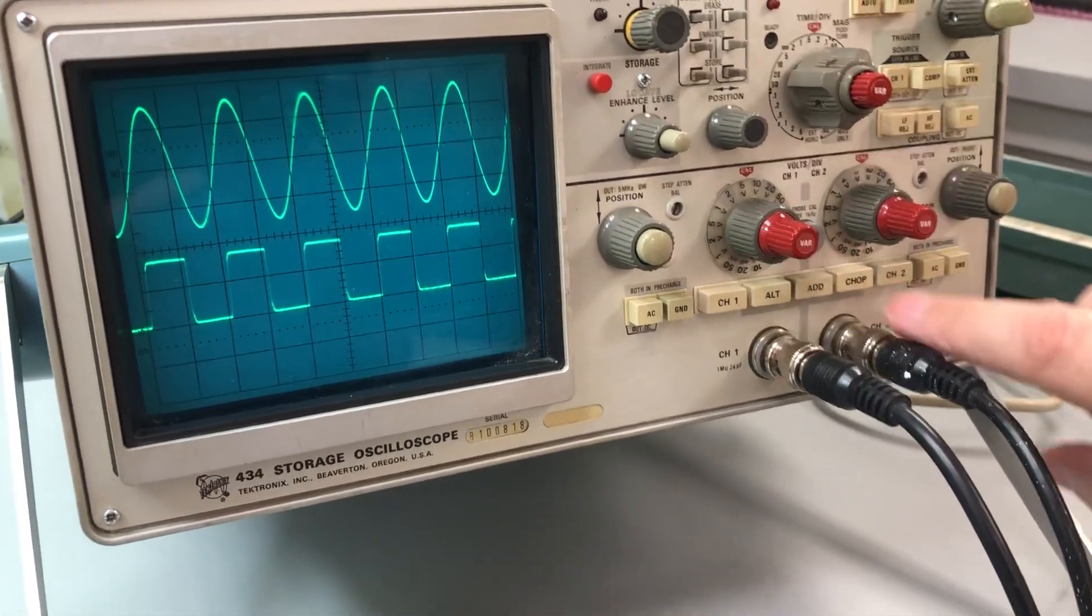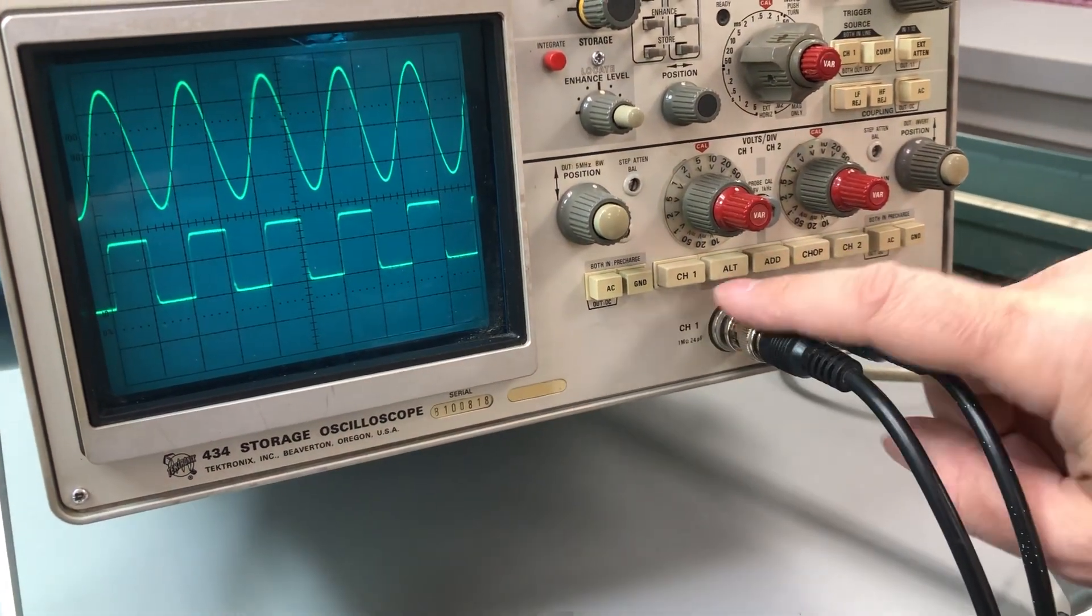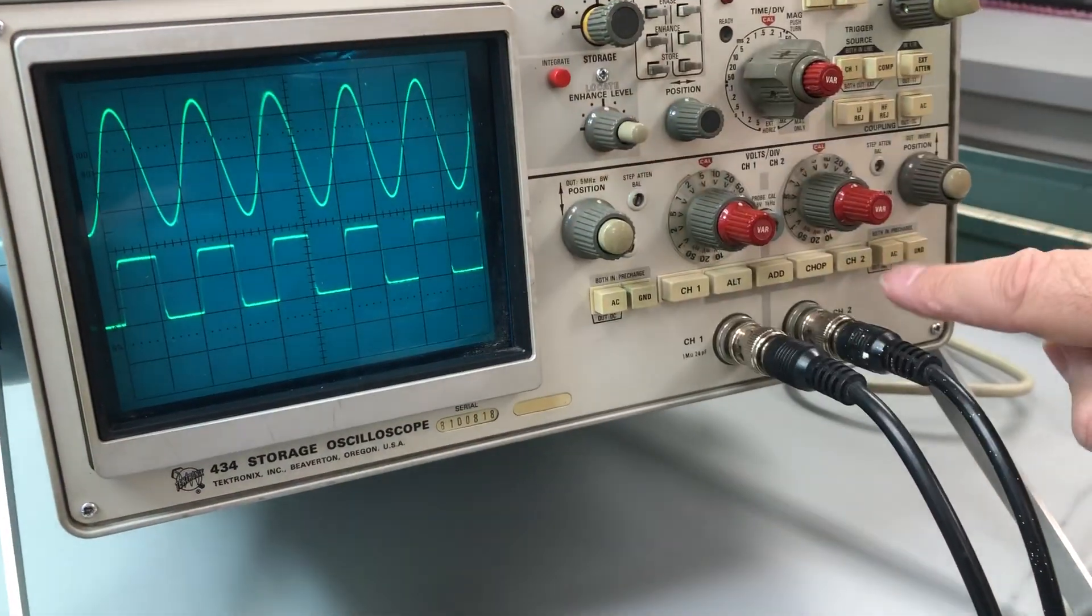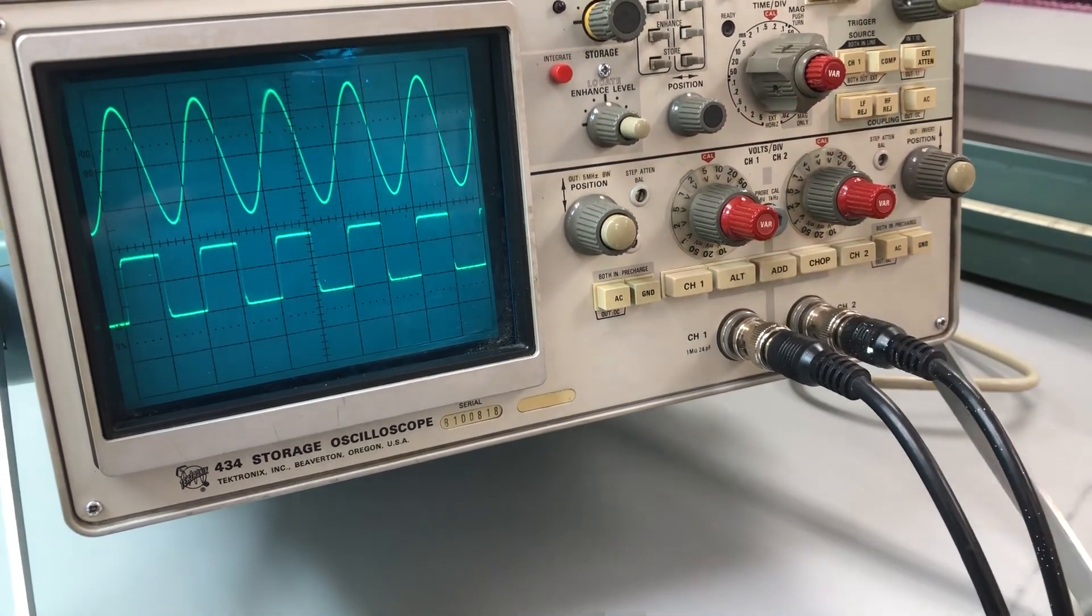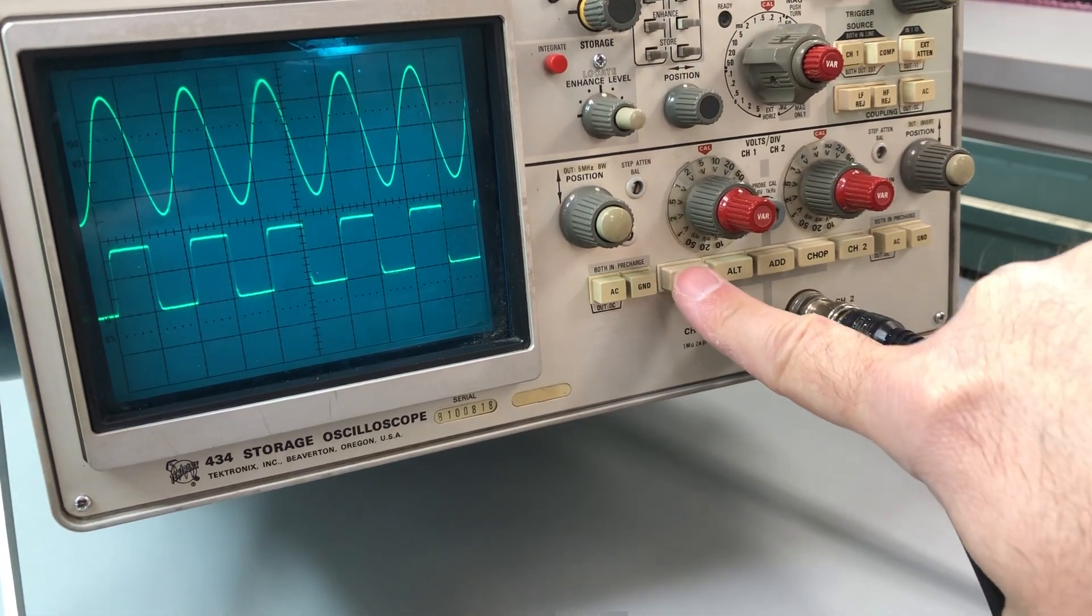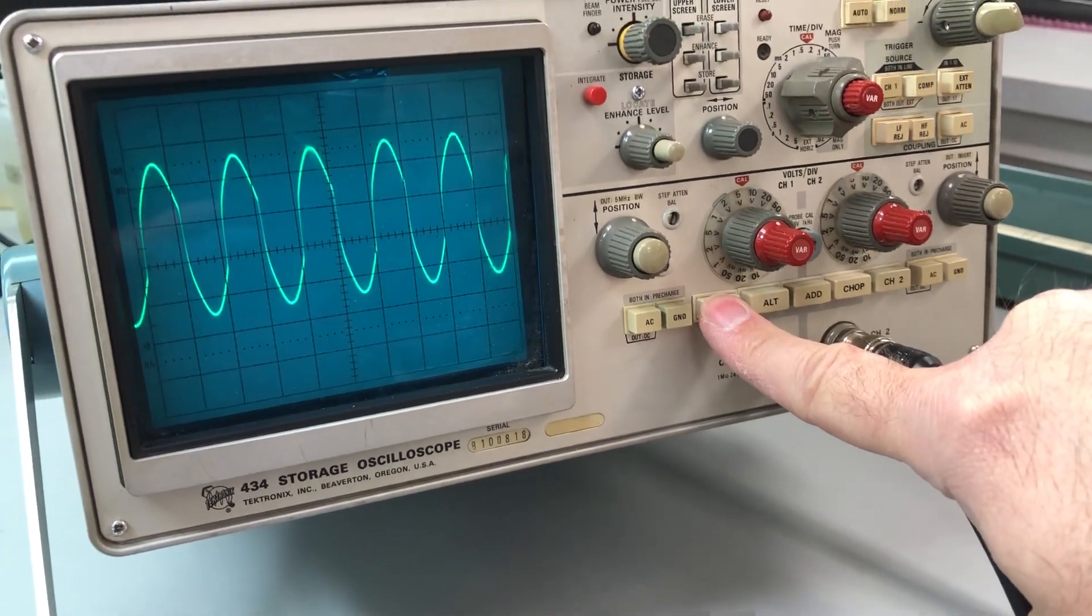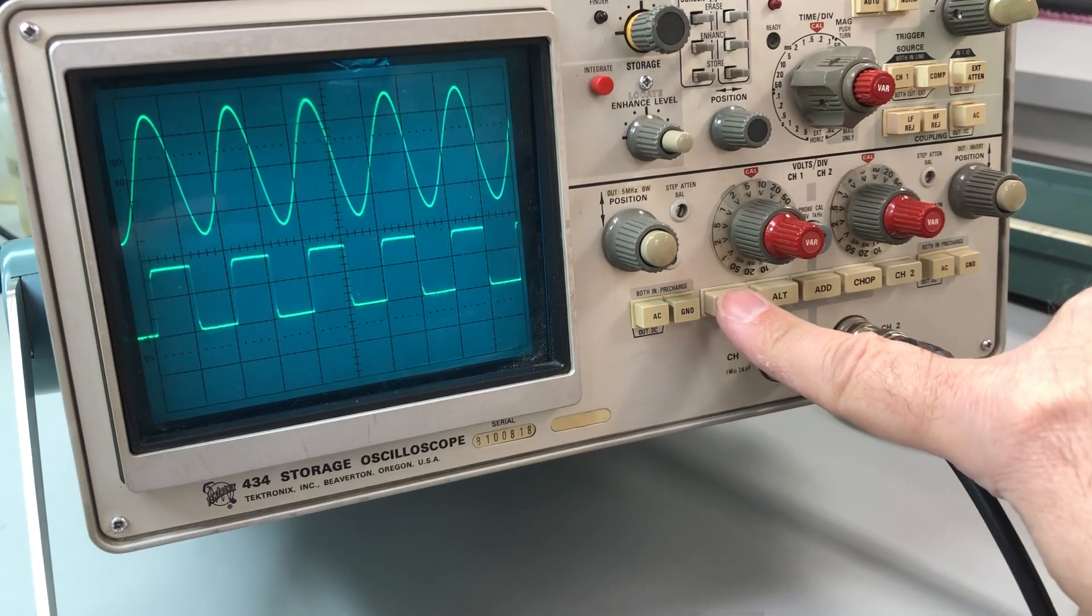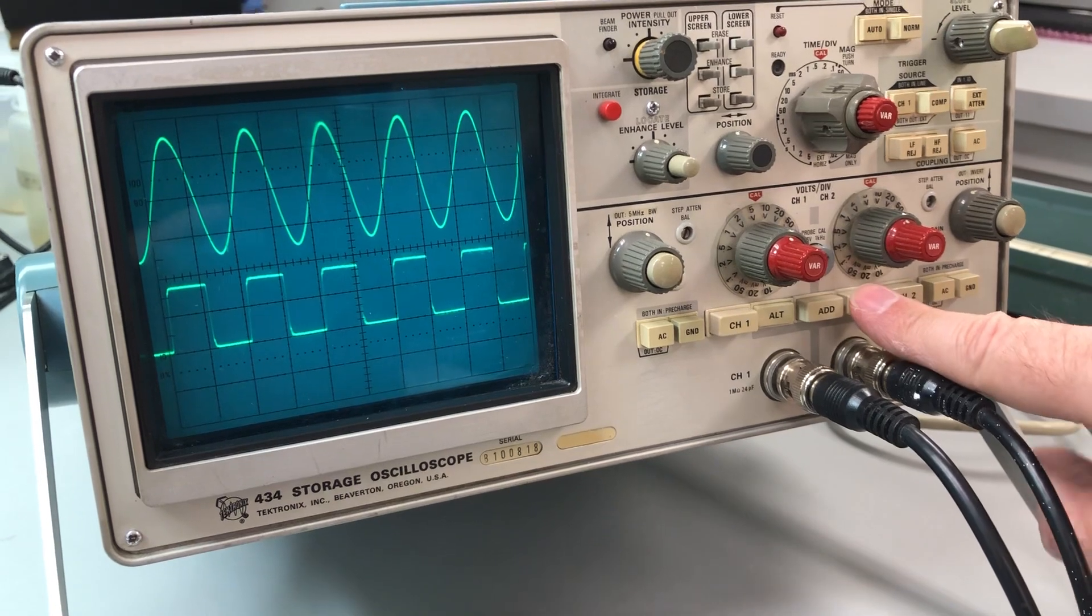The major problem with this scope is this selector switch. It selects either channel one, or you can alternate channel one and channel two, or you can chop channel one and channel two, or channel two only, or you can add the two channels together. The major problem is that it does not lock for channel one. In fact, it doesn't seem to really select channel one by itself. You're getting something very much looking like the add function. When you press channel one, it doesn't lock.